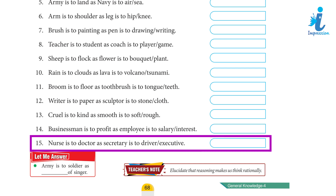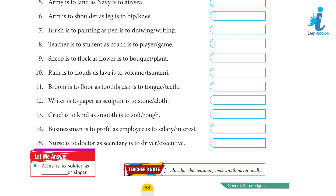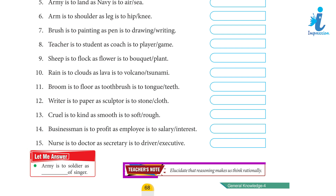15. Nurse is to doctor as secretary is to executive. For example: Army is to soldier as dash is to singer. Teacher's note: Elucidate that reasoning makes us think rationally.